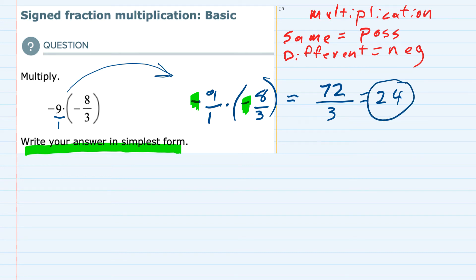There is one shortcut that we could have used whenever multiplying fractions to get the reduced number more quickly. And in order to show that, I'm going to rewrite the problem one more time.